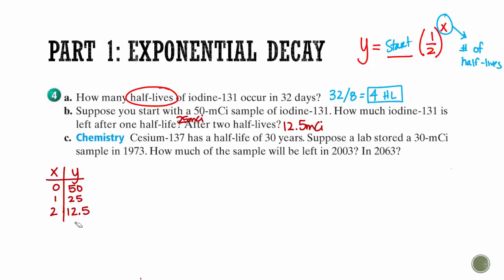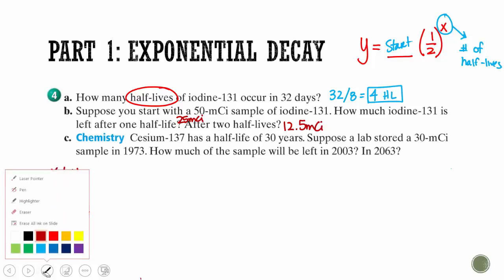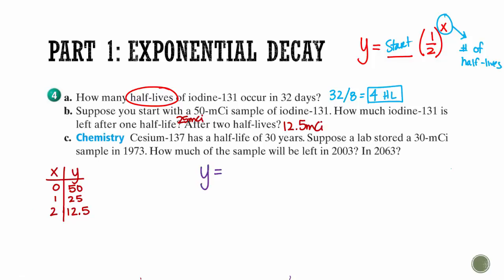So here's a new problem. Cesium-137 has a half-life of 30 years. Suppose a lab stored 30 millicuries in 1973. How much is going to be left in 2003 and then 2063? So let's write an equation. I see half-life, so I know it's going to look like this. And then we started with 30 millicuries. So here's our equation. Remember that this is number of half-lives and not number of years. So when I ask how much of the sample will be left in 2003, between 2003 and 1973, there's been 30 years. I'm not going to plug in 30 here. I'm going to plug in 1, because that's one half-life. So we can kind of do this one in our head. 30 times a half is 15. So 15 millicuries will be left in 2003.